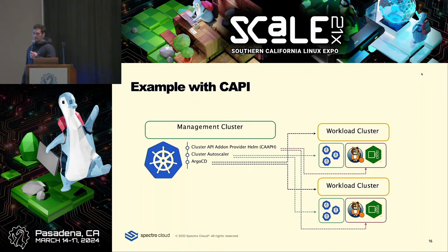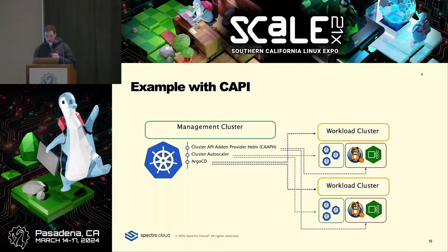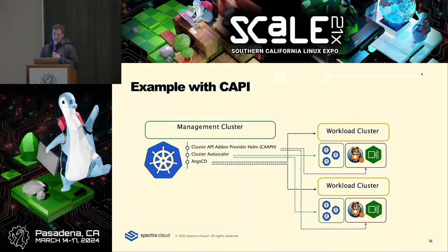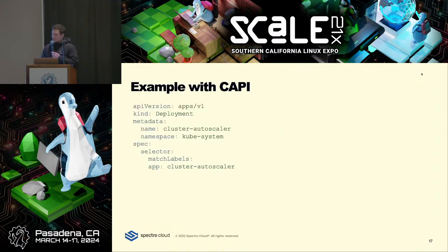That's where the Cluster API Provider Helm comes in — it's an add-on system for Cluster API that lets you specify Helm charts to apply on top once the cluster comes up. Then you might layer in the rest of your application workload with Argo CD via a GitOps approach. Cluster Autoscaler, in this case, sits on the management cluster, though it's also configurable to be on the workload cluster or somewhere else.